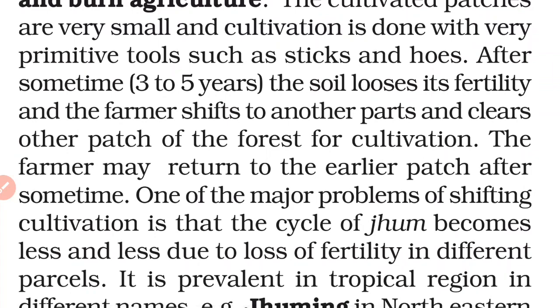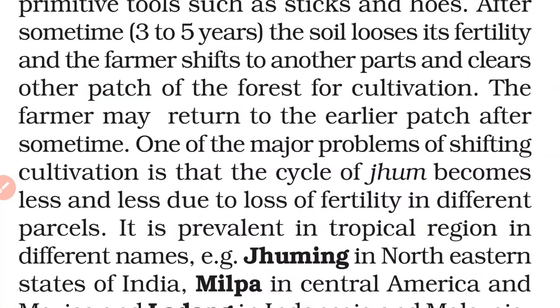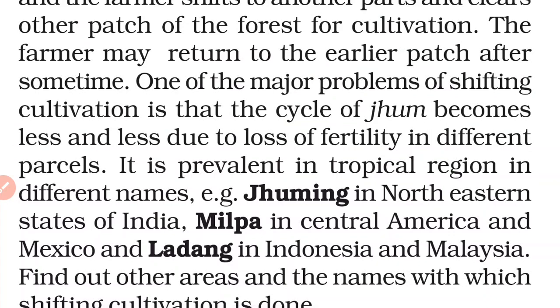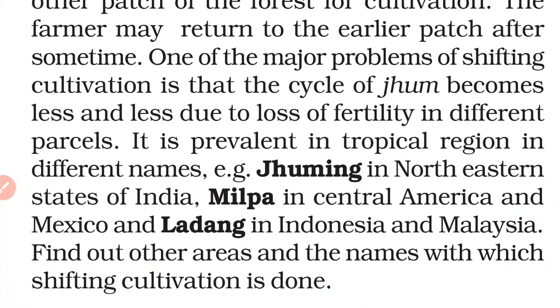Shifting cultivation is prevalent in tropical regions and is known by different names in different places. It is called Jhum in the northeastern states of India, Milpa in Central America, and Ladang in Indonesia and Malaysia.